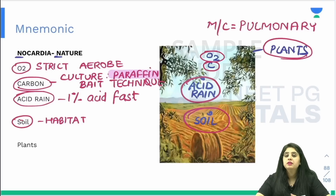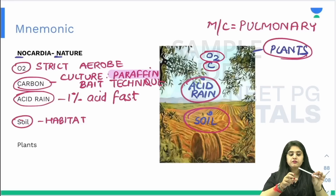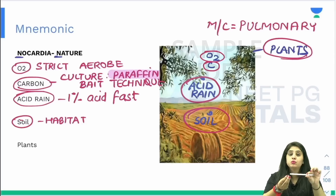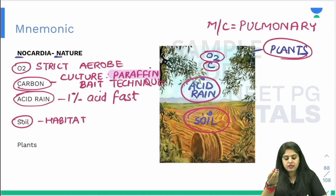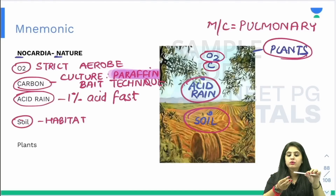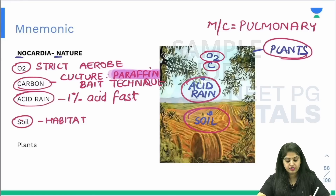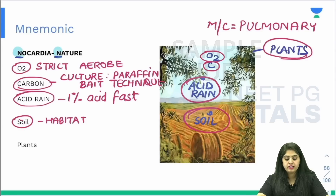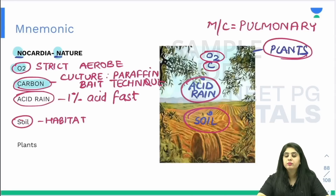Who is going to give it carbon? Paraffin is the bait. What do you understand by bait? Anyone who has done fishing — to that fishing rod you attach some food, and that is the bait you use to catch the fish. Same way, you are putting a little bit of carbon. That carbon comes from paraffin. That paraffin is like a bait — if I put carbon then Nocardia is going to grow, because Nocardia wants to use the carbon. So oxygen is in nature — strict aerobe. Carbon is there — paraffin bait technique.